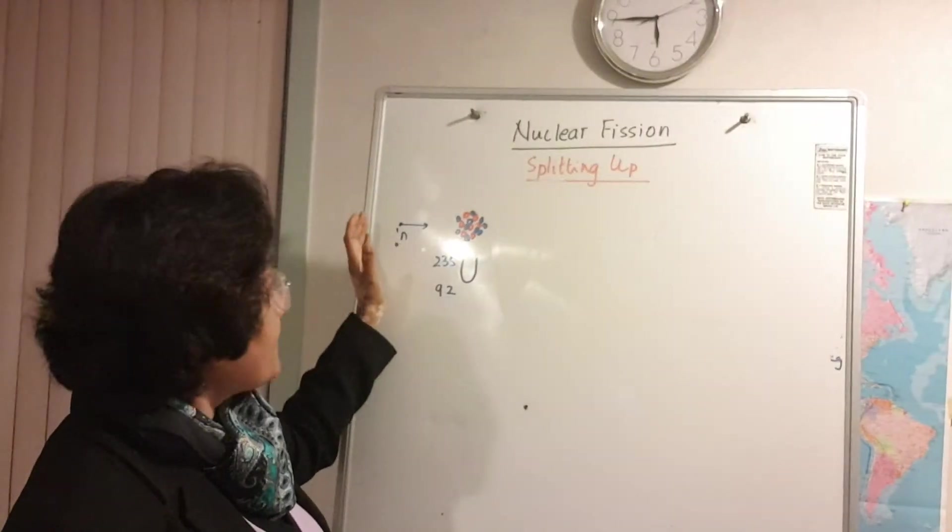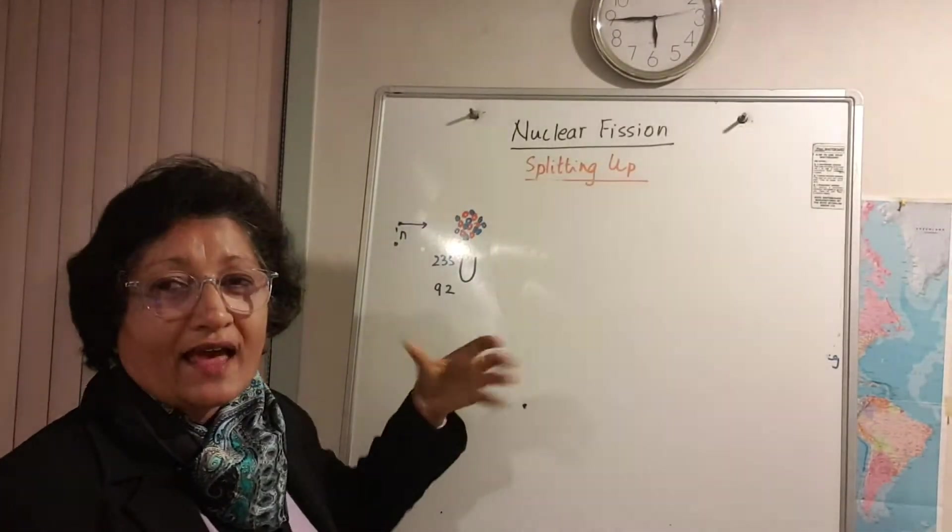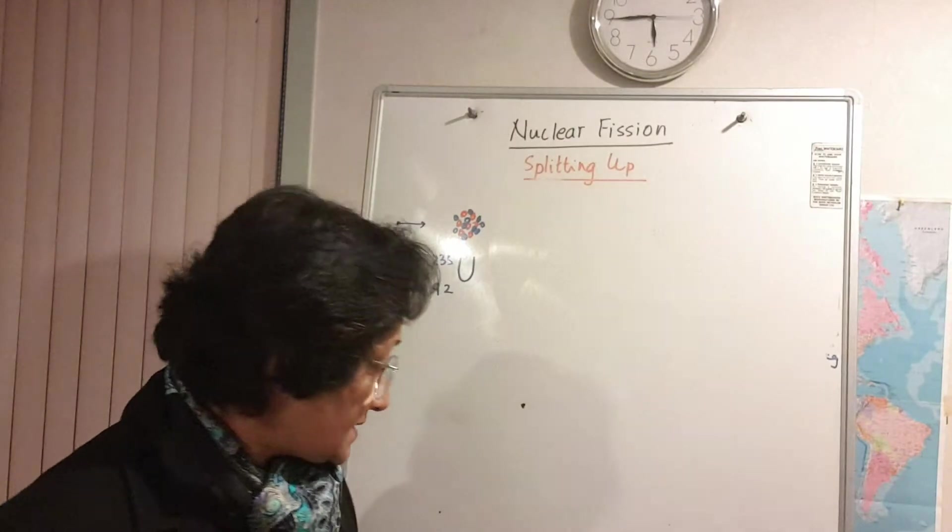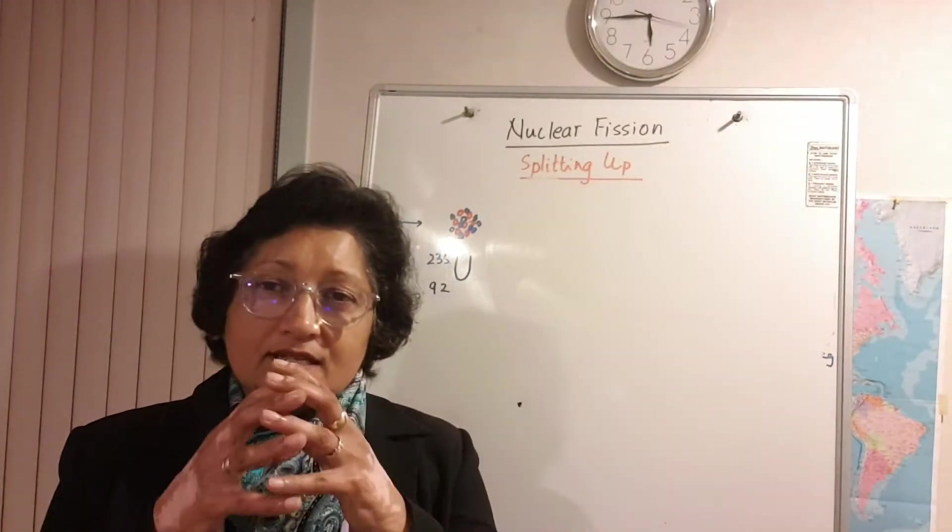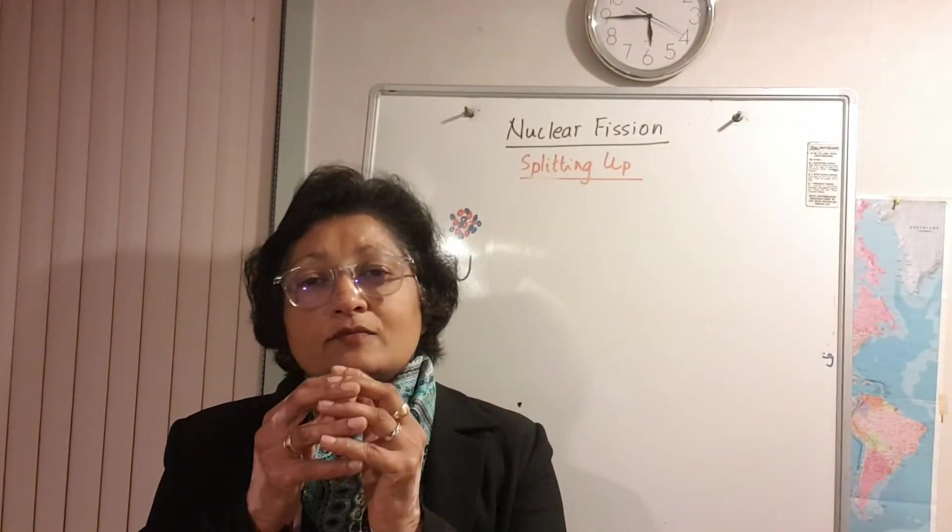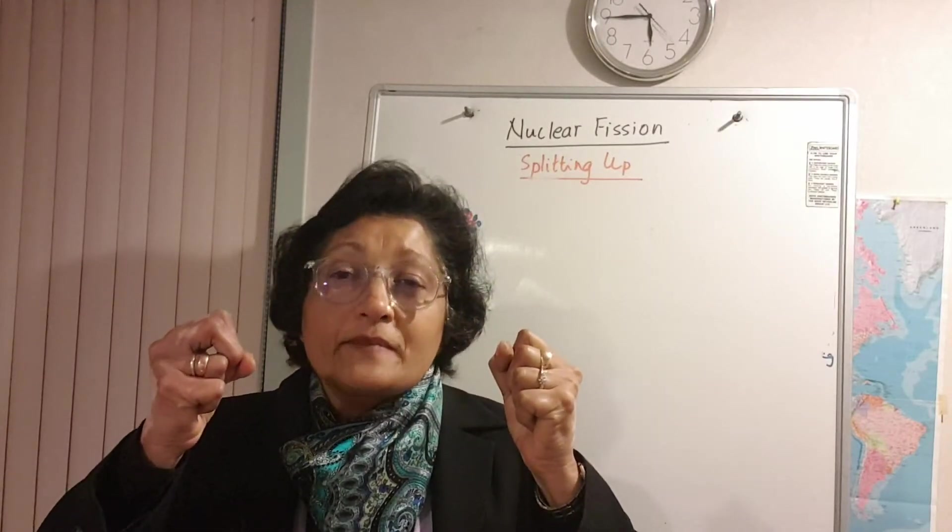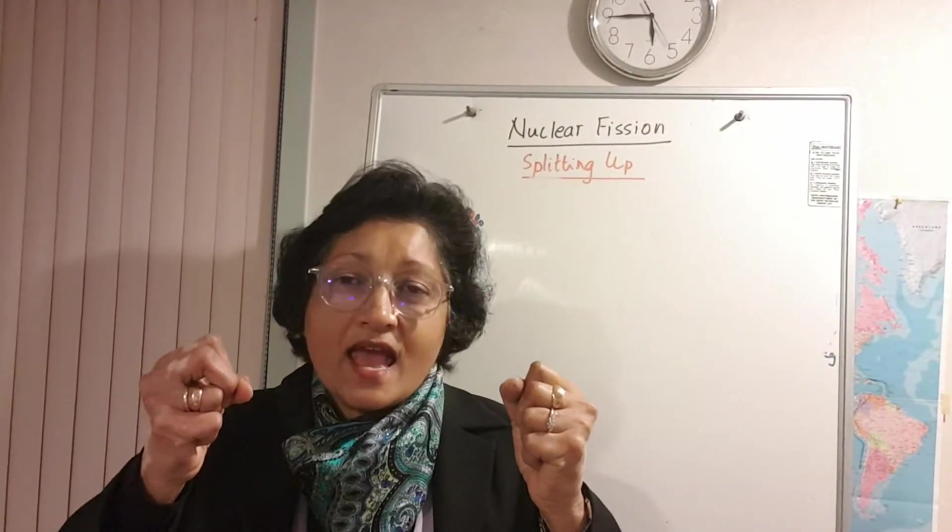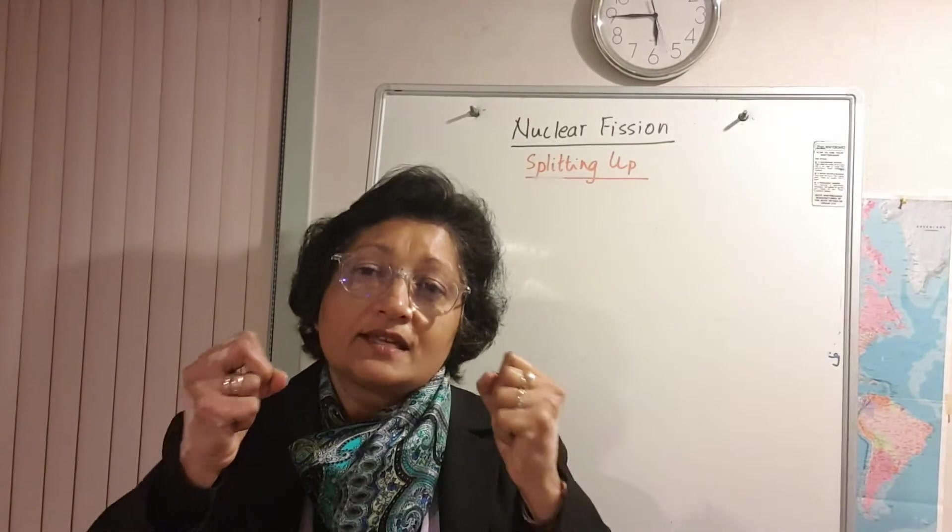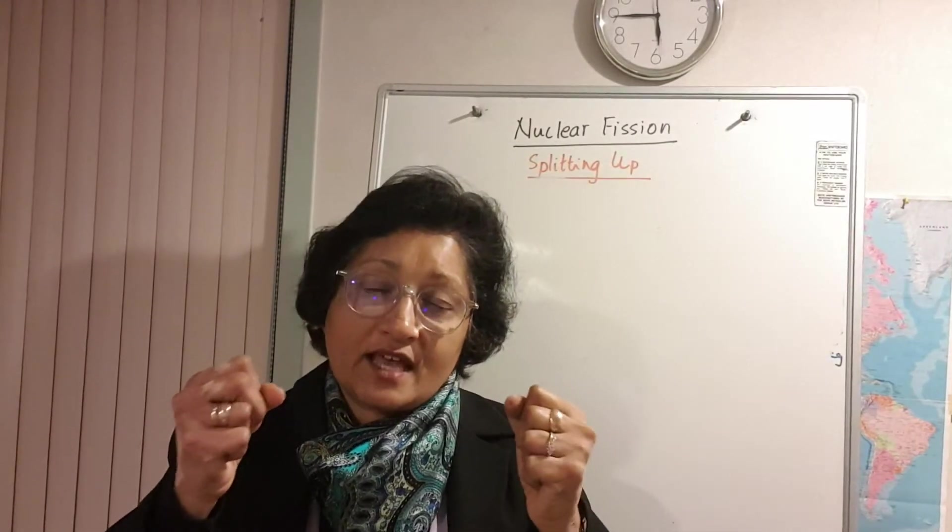So what happens is it captures a slow-moving neutron and that renders it even more unstable and this large uranium nucleus splits into two medium-sized nuclei. In addition to this splitting up into two medium-sized nuclei,